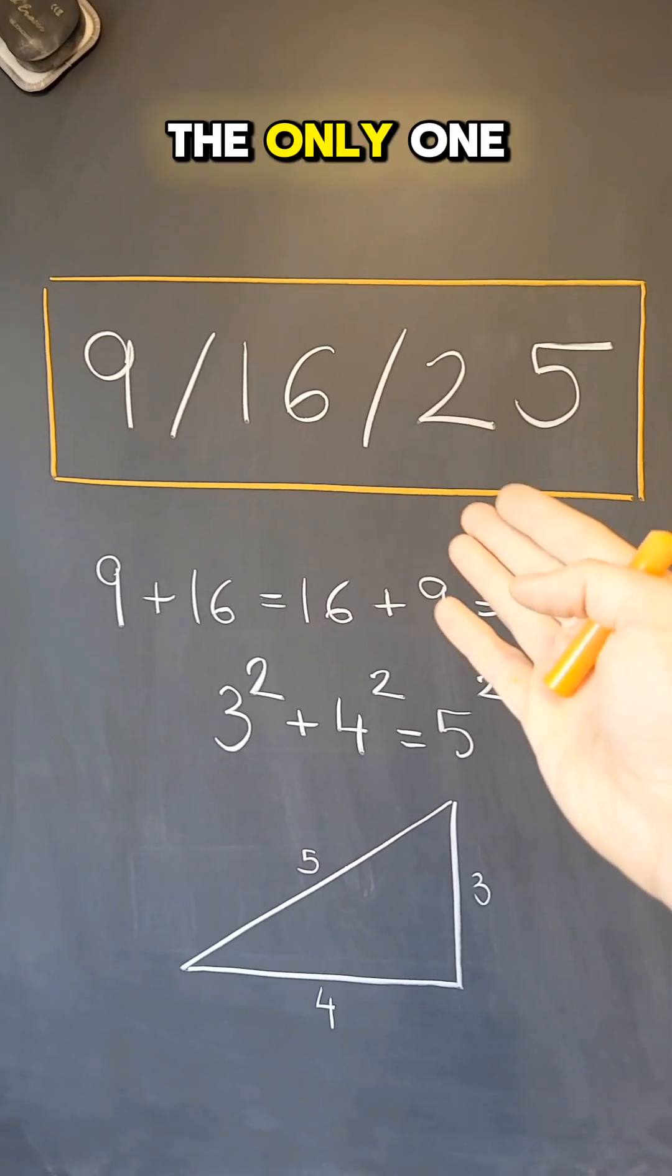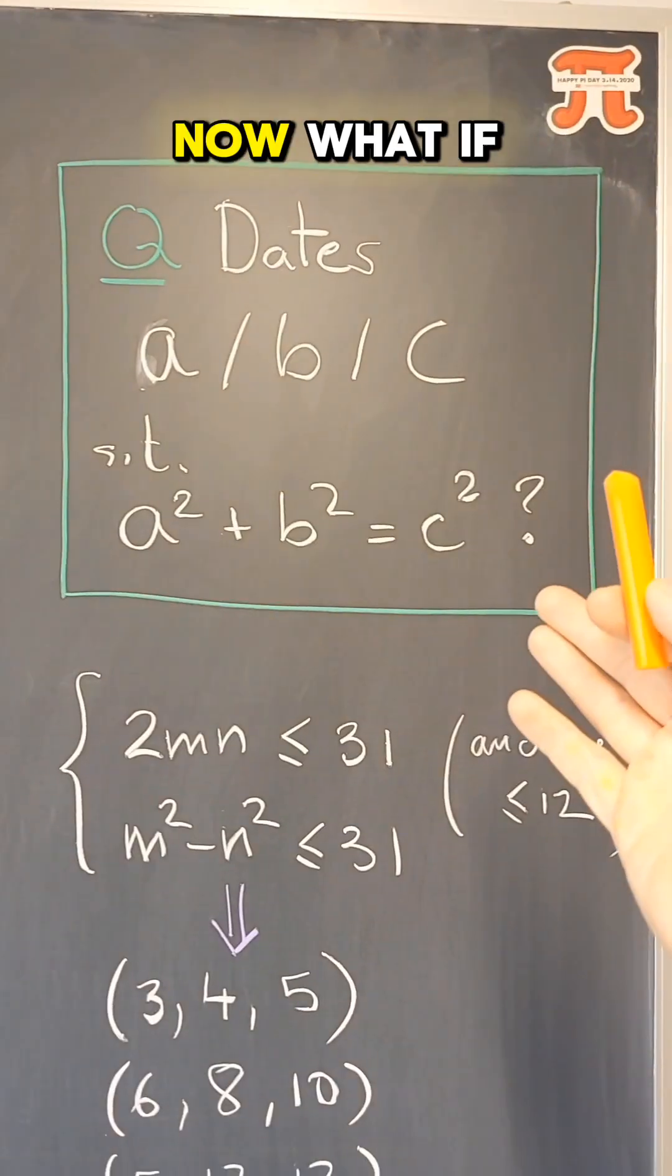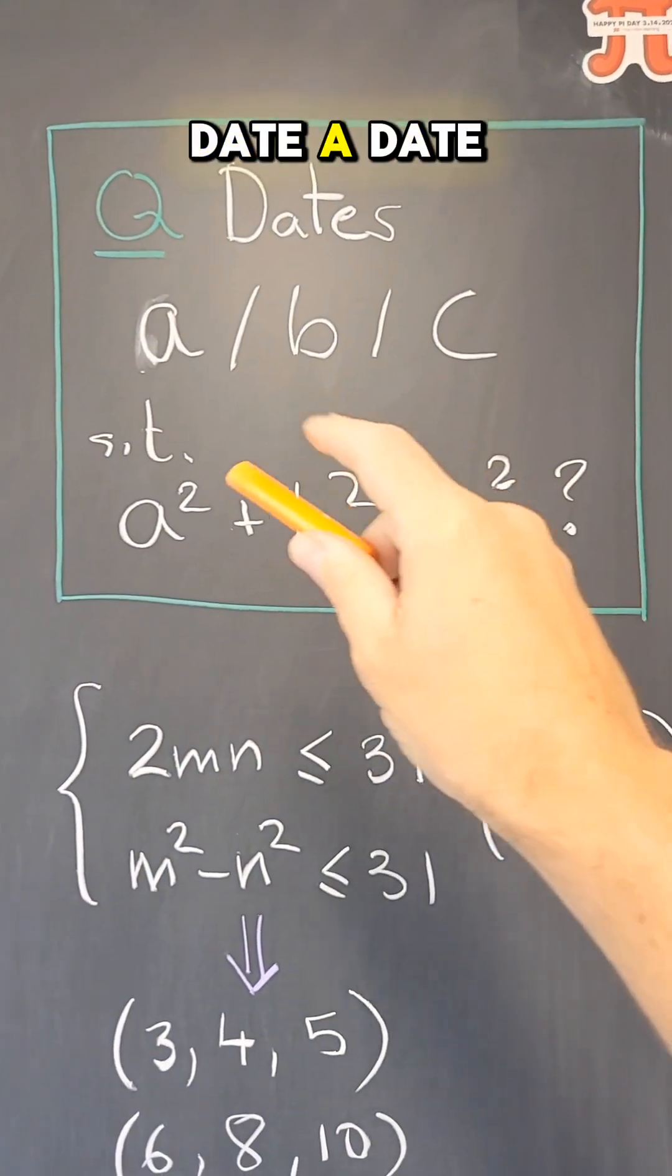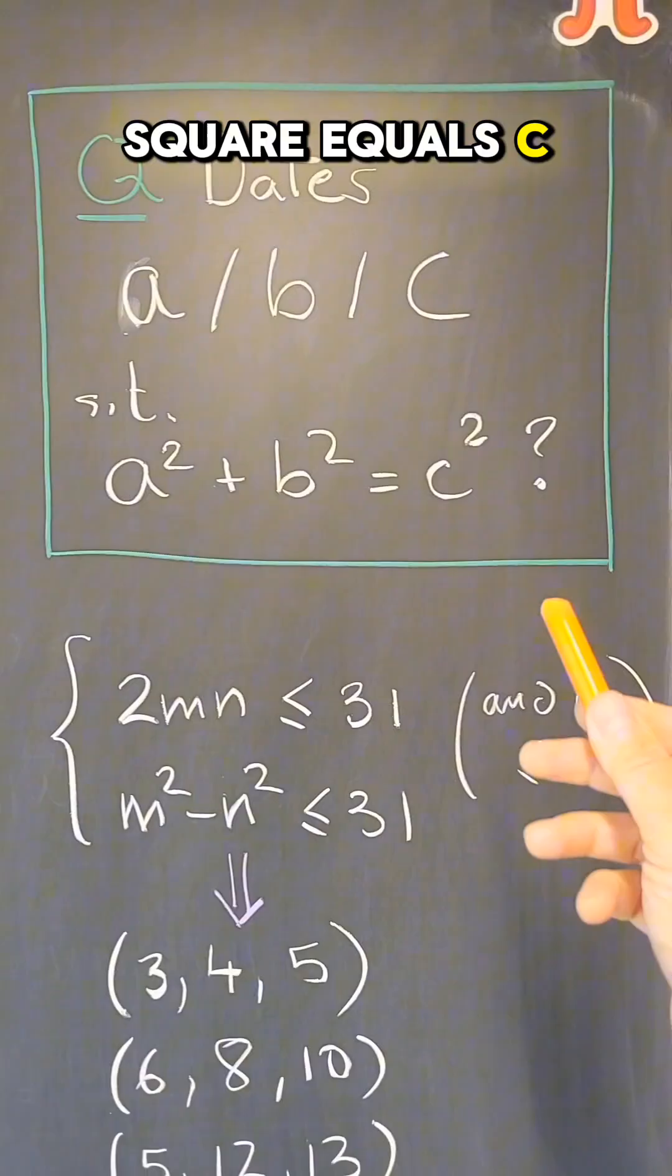So this is the only one that works in the entire century. Now, what if we relax that, and we call a weak Pythagorean date a date A, B, C, such that A squared plus B squared equals C squared.